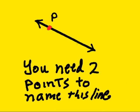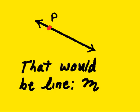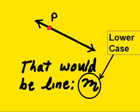You need two points to name this line, and we only have one. So you've got to call it by the line name. That would be line, let's say, M. M would have to be lowercase and script.